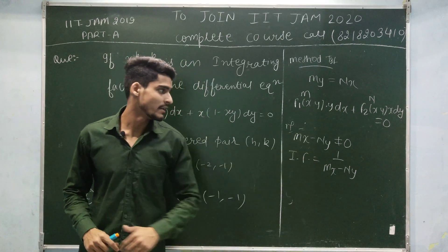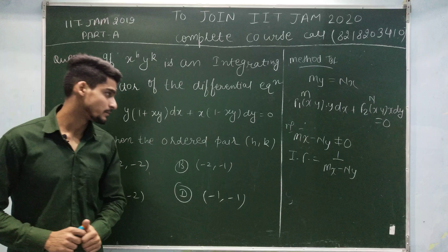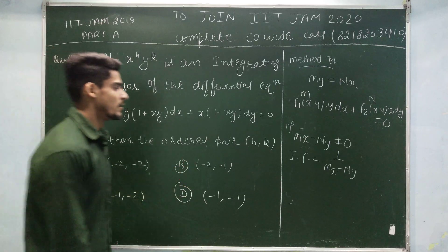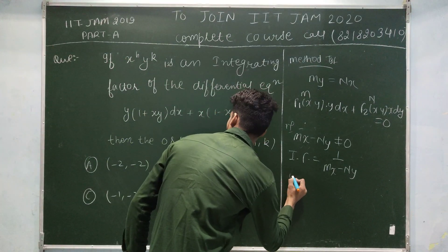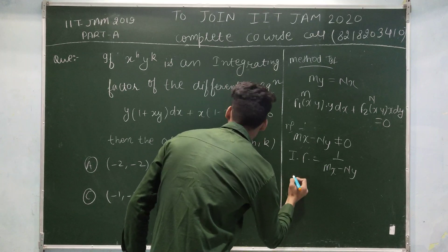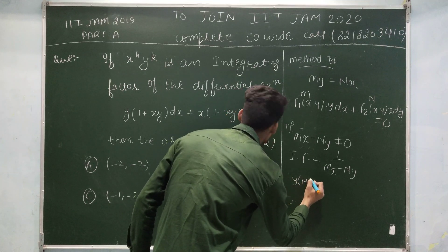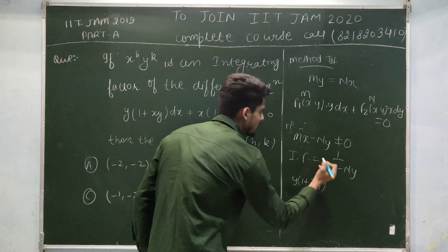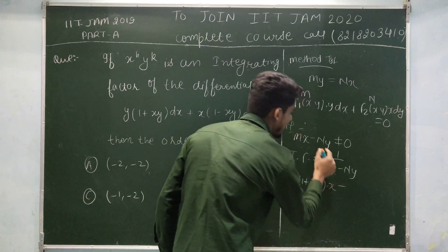Let us check for it. What is m? m is y times (1 plus xy) into x minus what is n?